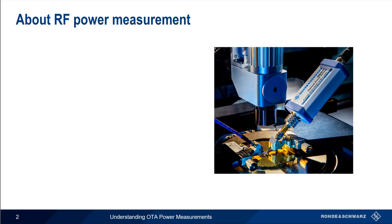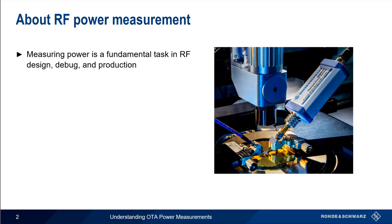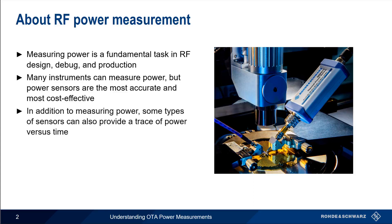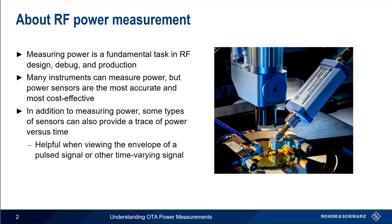Let's start with a brief overview of RF power measurement. Measuring the power of a signal is one of the most fundamental tasks in RF design, debug, and production. Although power can be measured with many different instruments, the most accurate and cost-effective way is using an RF power sensor. Some types of power sensors have additional functions, such as the ability to generate a power versus time trace. This is helpful, for example, when viewing the envelope of a pulsed or other time-varying signal.